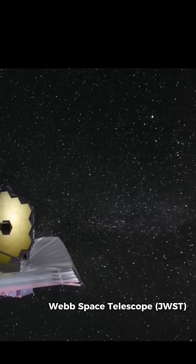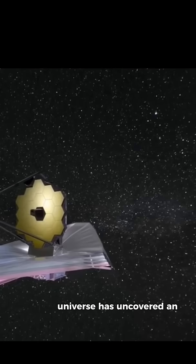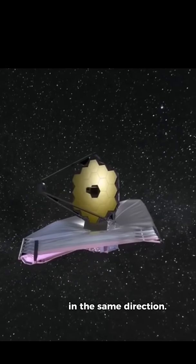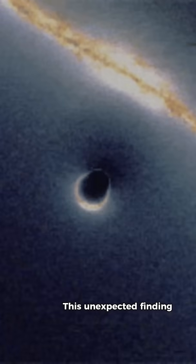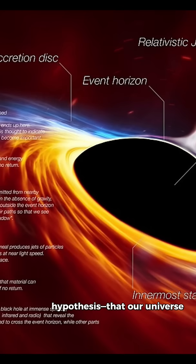A recent study analyzing James Webb Space Telescope observations of the early universe has uncovered an intriguing anomaly. A majority of galaxies appear to rotate in the same direction. This unexpected finding challenges current cosmological models and has led researchers to propose a bold hypothesis that our universe might reside within a black hole.